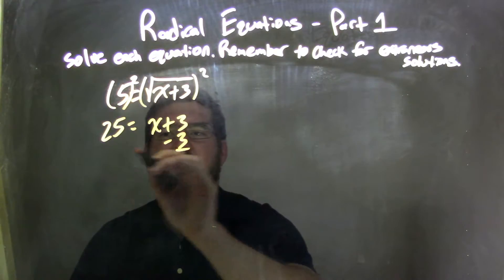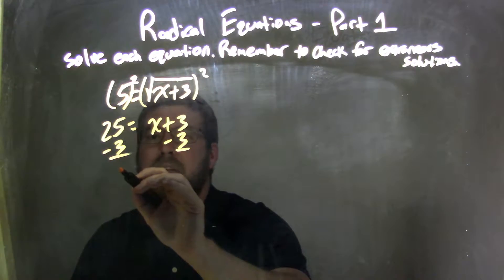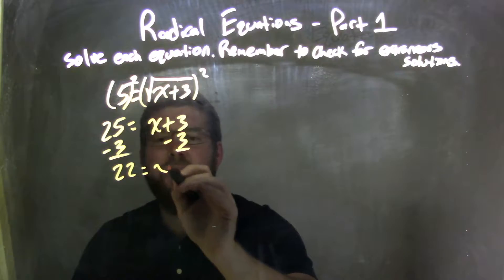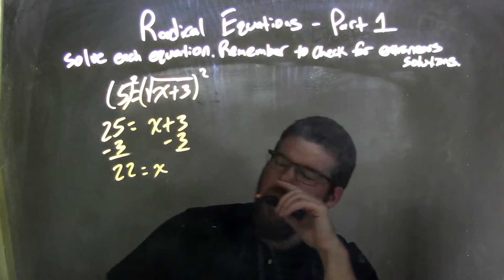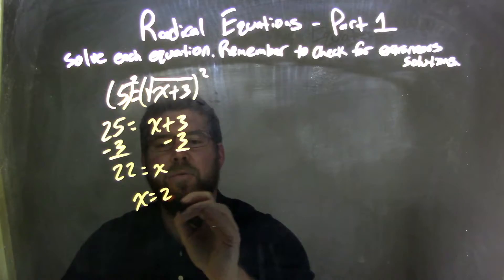I then subtract 3 from both sides, leaving me with 22 equals x. And then I can write it nice and neat, have x come first, so x equals 22.